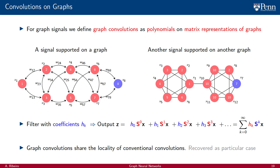As highlighted by our illustrations, multiplication of a graph signal with a matrix representation of the graph on which it is supported is a local operation. This is a feature that graph convolutions share with conventional convolutions in time and space, and that underlies their practical value, as we will see throughout the next few weeks.